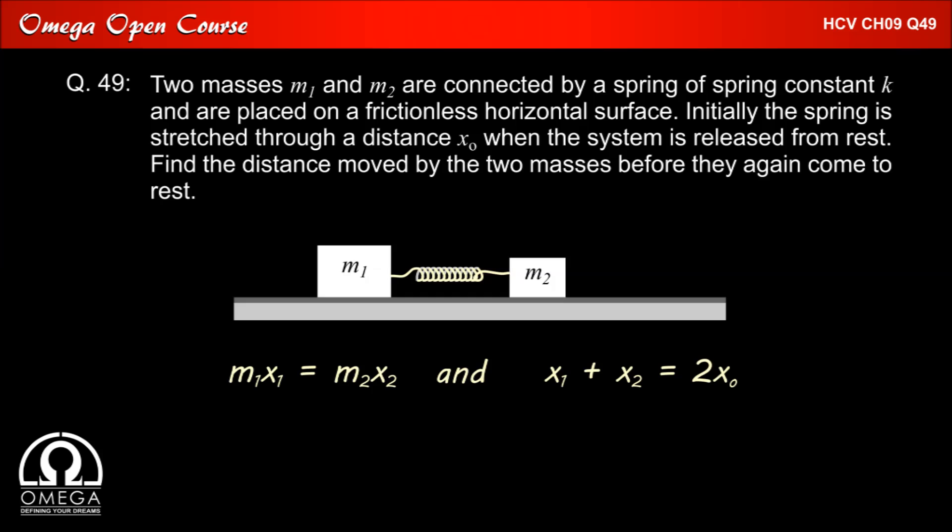Also, since the total distance traveled by both the bodies is 2x0, x1 plus x2 must equal 2x0. Solving these two equations, we get x1 equals 2 M2 x0 divided by M1 plus M2, and x2 equals 2 M1 x0 divided by M1 plus M2.